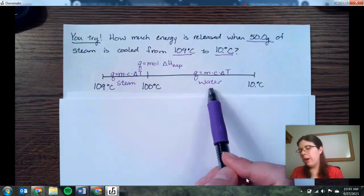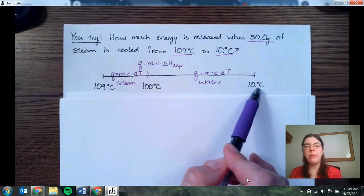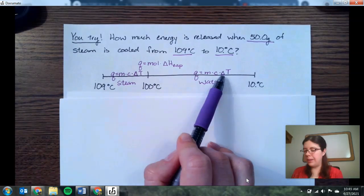And then from there, once we get to liquid water, we're going to cool it down to 10 degrees Celsius. Again, we have a change in temperature, so we're going to use that Q equals M times C times delta T.